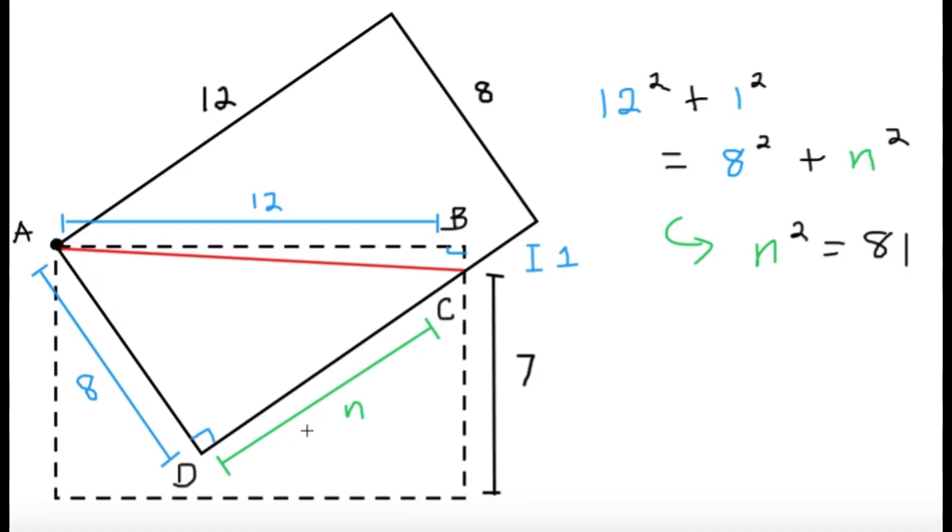Now I would want this n because, for example, I have split this quadrilateral ABCD into two regions. This will be region 1 and this would be region 2. Now for region 2, I already have the two legs of the right triangle, so I can get the area of that. But for region 1, or this first triangle over here, I'm missing the other leg.